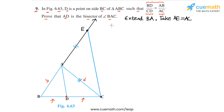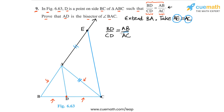We are given that BD/CD equals AB/AC. Because of our construction we also have AC equal to AE. So instead of AC we can write AE in the given equality, which gives us BD/CD equals AB/AE.